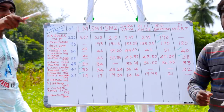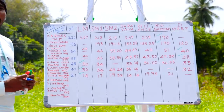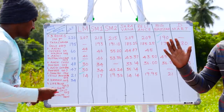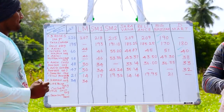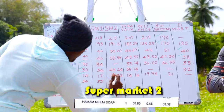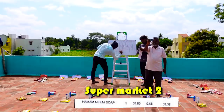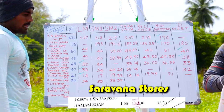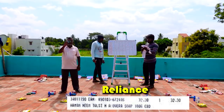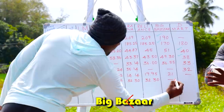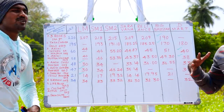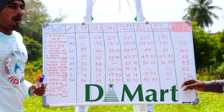Next is the 100 grams product. This MRP is 24. Local market is 24. Supermarket is 23. Supermarket is 23, and 23. Reliance market is 32. Big Bazaar is also 32. D-Mart is 32. So the absolute winner is D-Mart — the supermarket at 23 vs others at 32.